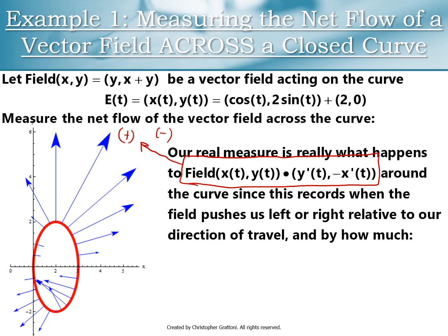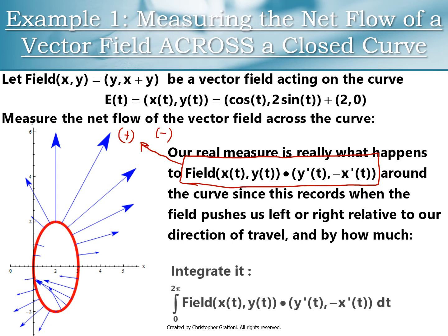By seeing if this dot product evaluates to a positive number or a negative number — the more positive, the stronger the push; the less positive, the weaker that push is. So I want to accumulate that net effect as I traverse my closed curve. The integral I want to compute is the integral of field dot normal.